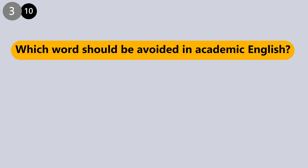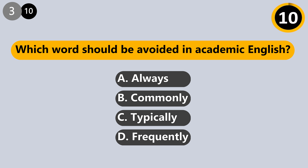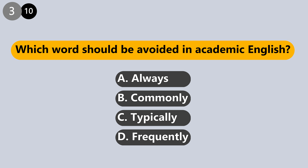Which word should be avoided in academic English? Always, commonly, typically, or frequently? The answer is: always. Academic writing is usually unadorned and direct. Some adverbs of frequency may also not be accurate, so be careful with such words and try to use more precise data.